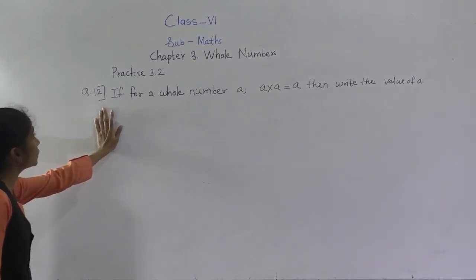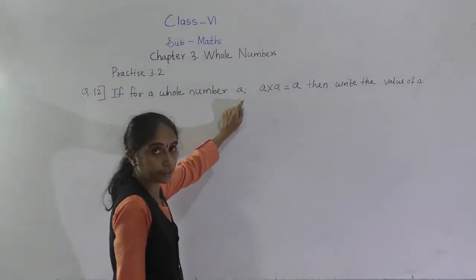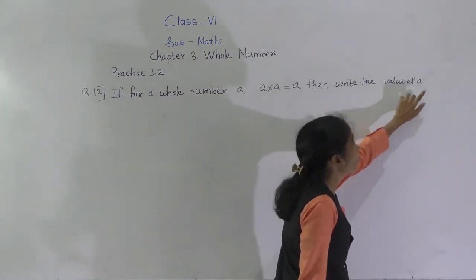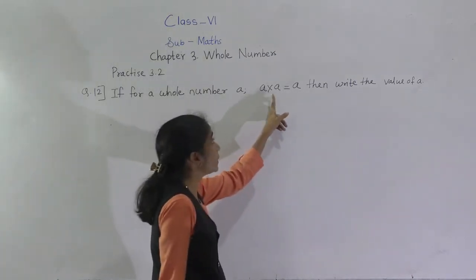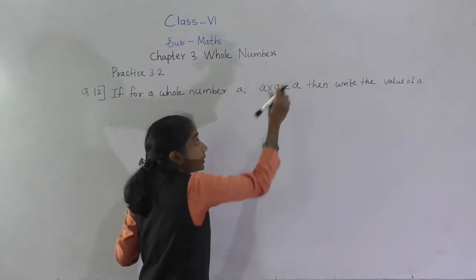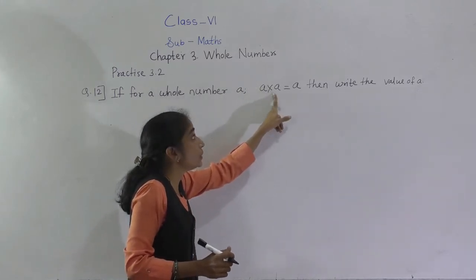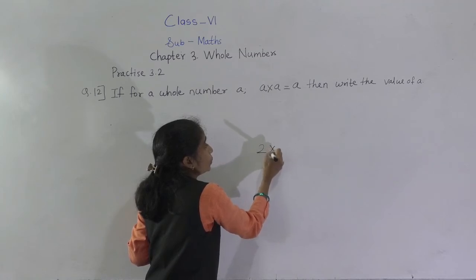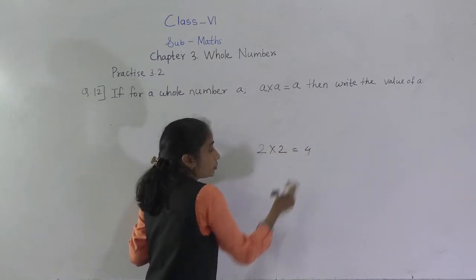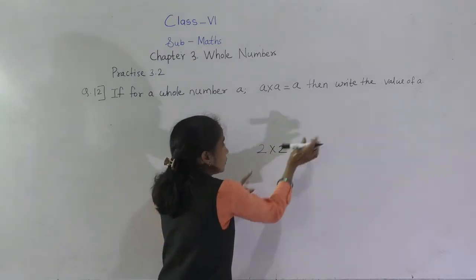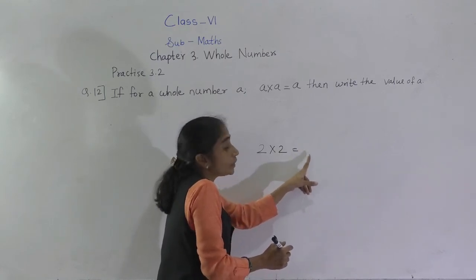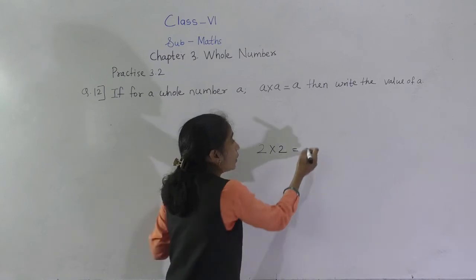Let's solve question number 12. If for a whole number A, A multiplied by A is equal to A, then write the value of A. Suppose you take A as 2: 2 into 2 is 4, not 2. So A equals 2 does not satisfy A into A equals A.